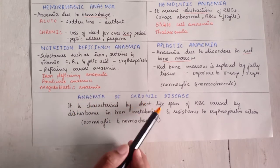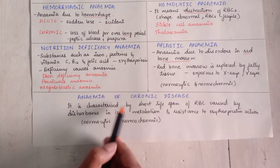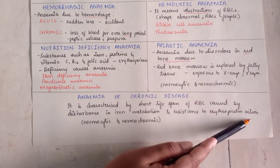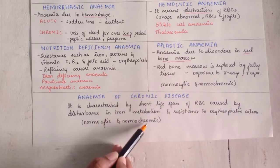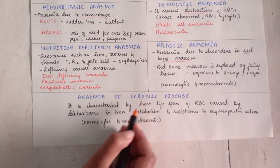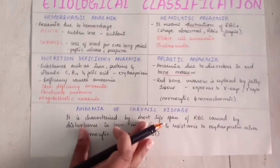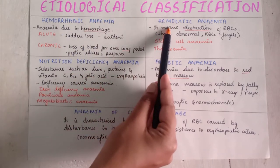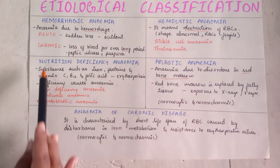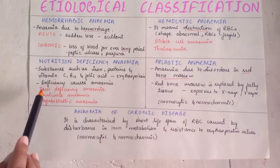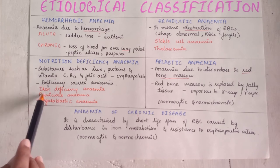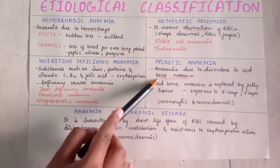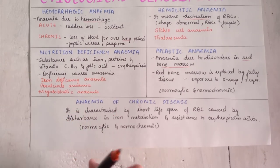Fifth: anemia of chronic disease. It is characterized by a short lifespan of RBCs caused by disturbance in iron metabolism and resistance to erythropoietin action. Here it is normocytic and normochromic, caused by chronic diseases including infections and many other conditions. So to summarize: hemorrhagic (bleeding), hemolytic (destruction — sickle cell and thalassemia), nutritional deficiency, aplastic (red bone marrow disorder), and anemia of chronic disease.